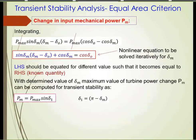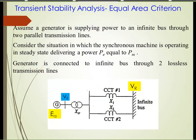Moving to the next application of Equal Area Criteria to analyze stability: we have a generator, a transformer, and two parallel transmission lines — circuit 1 and circuit 2 — connected to an infinite bus system. This is a two-machine system: the generator is machine one and the infinite bus is the large machine. Their connection is through two parallel transmission lines.